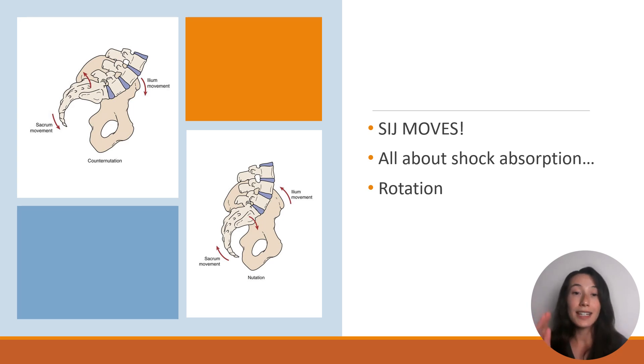With nutation, the top of the sacrum—the most superior aspect—is moving anteriorly and inferiorly relative to the pelvic bones. This doesn't mean the iliac bones are staying steady; they actually move in the opposite direction. The terms nutation and counter-nutation are talking about movement from the point of view of the sacrum relative to the iliac bone. All the bones move.